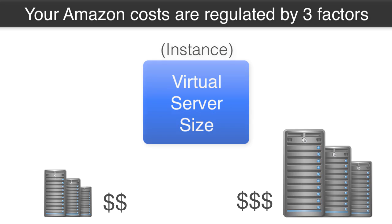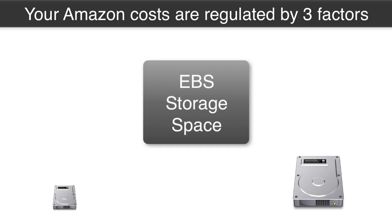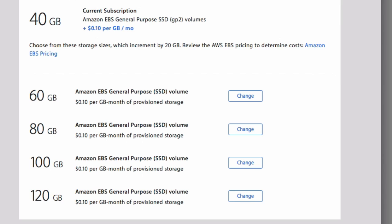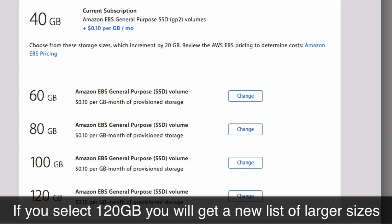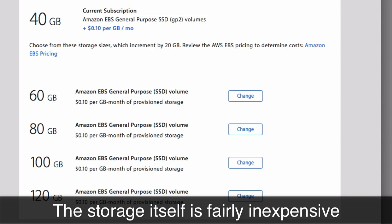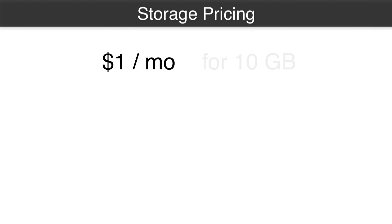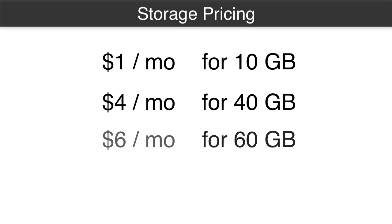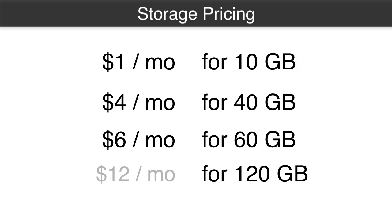The second component is the amount of storage you are using. When you set up FileMaker Cloud initially, you'll be presented with choices for hard drive size between 40 gigabytes and 120 gigabytes. If you select 120 gigabytes, you'll be presented with options larger than 120 — so the technology is not limited to that. This storage is really cheap: it's basically a dollar per month for 10 gigabytes. So 40 gigabytes is $4 a month, 60 is $6 a month, and 120 gigabytes is $12 a month.